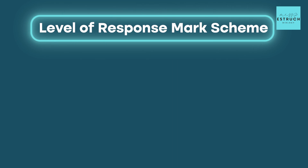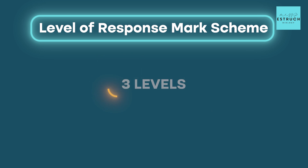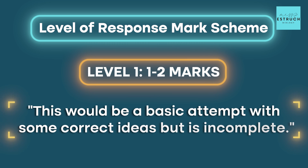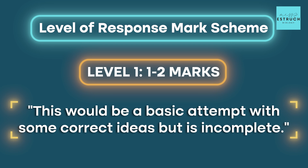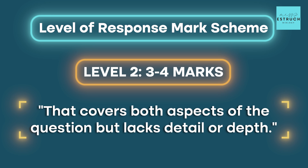Let's have a look at the mark scheme. These level of response mark schemes are always split into three levels. Level one is one to two marks — a basic attempt with some correct ideas but incomplete. Level two is three to four marks — it covers both aspects of the question but lacks detail or depth. And finally level three, five to six marks, is your full marks band where you fully answer the question with depth, clarity and correct terminology.